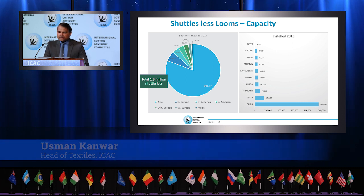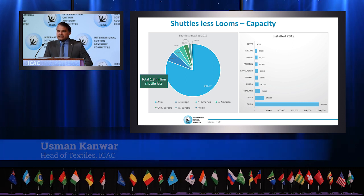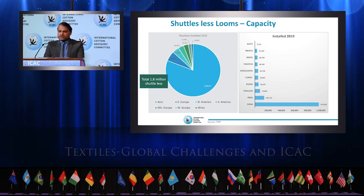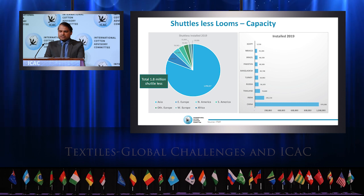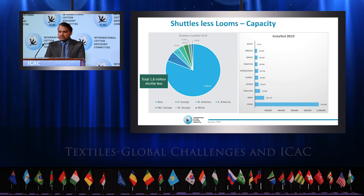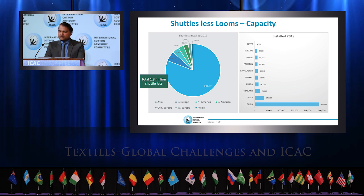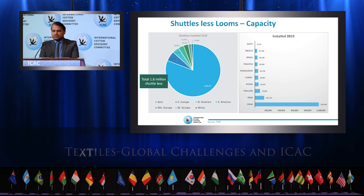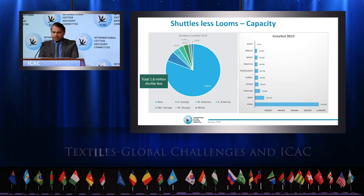In woven fabric production, Asia again takes the lead with 1.4 million shuttle looms installed out of a total 1.8 million shuttle looms. Followed by East Europe with a 6% share, just over 0.1 million shuttle looms. China is again the world leader with 1 million shuttle looms. Followed by India, only 18,000 — that is 1% of shuttle looms — are installed in Africa.